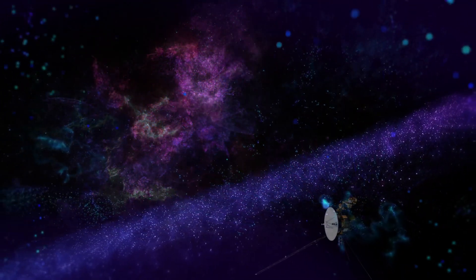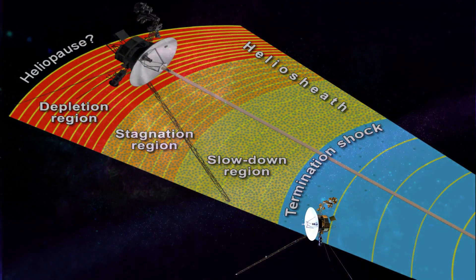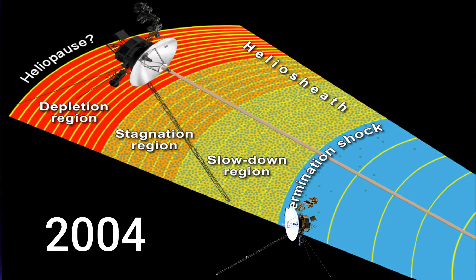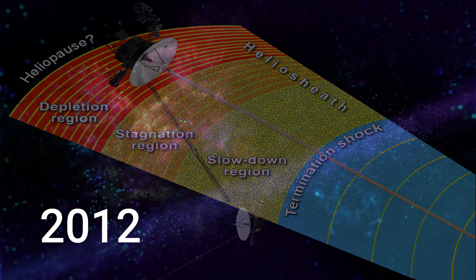Voyager 1, the farthest man-made object, crossed the termination shock in December 2004 and later entered interstellar space completely after heliopause in 2012.